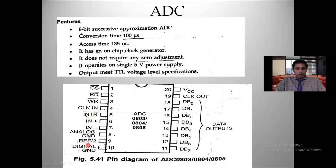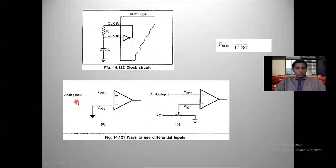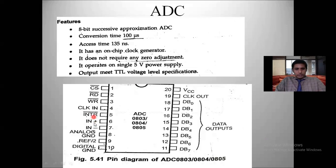There are two ground pins: analog ground at pin 8 and digital ground at pin 10, because one side of the ADC is analog and the other is digital. There are also two analog input pins — IN+ and IN−. These are connected to an op-amp. IN+ is connected to the analog input signal and IN− is connected to ground through the op-amp.